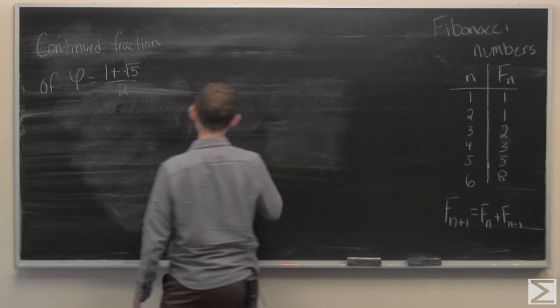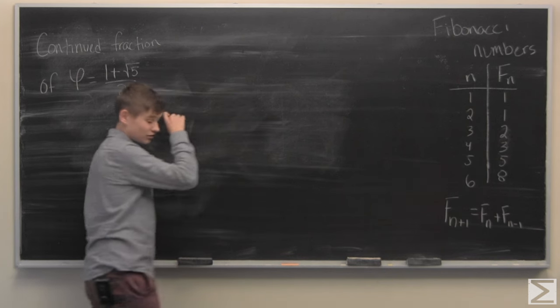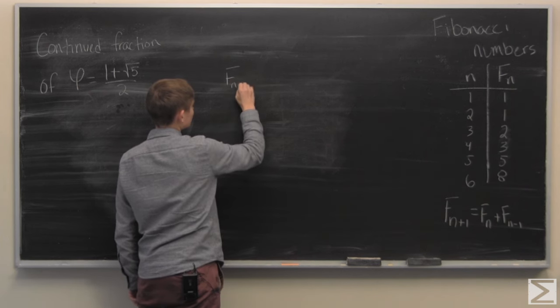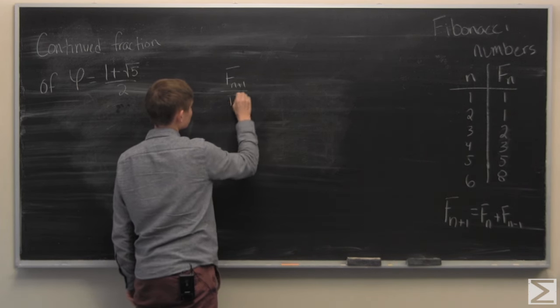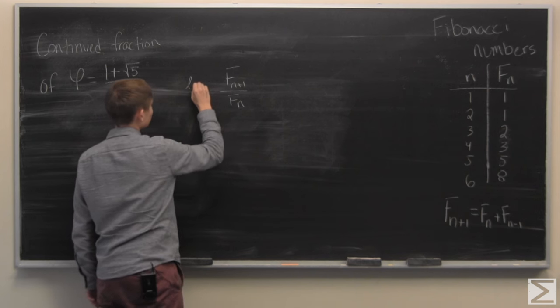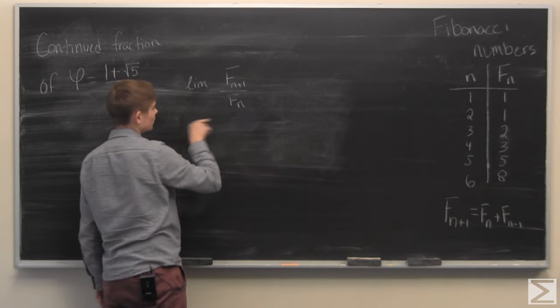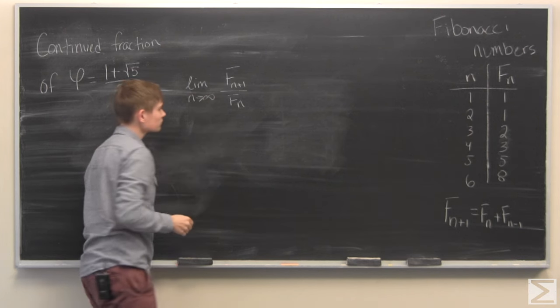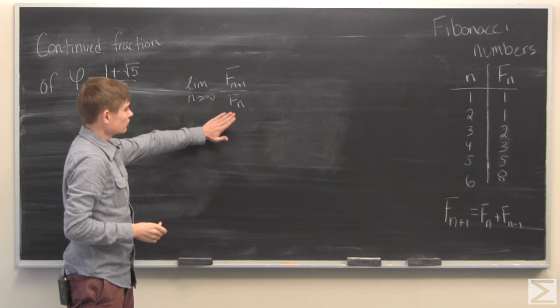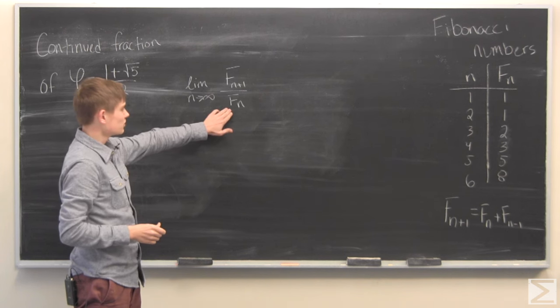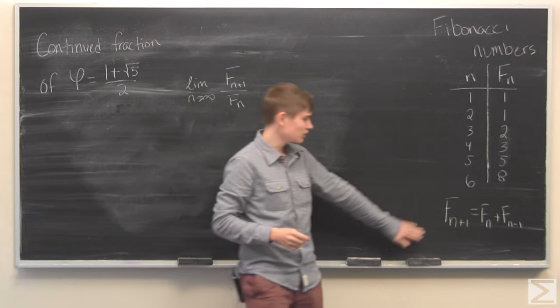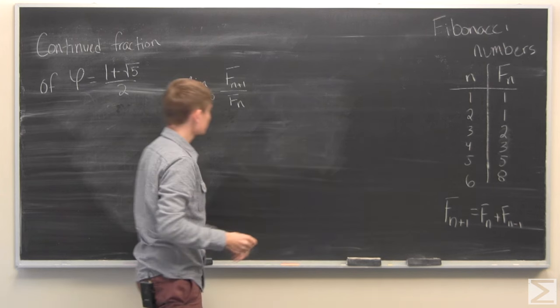To do this, we're going to calculate the ratio between consecutive Fibonacci numbers as they get very large as they approach infinity. What we can do is start manipulating this ratio. To do this, we're going to use the defining property of Fibonacci numbers.